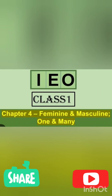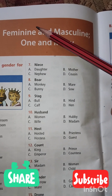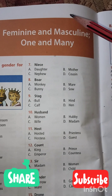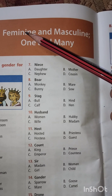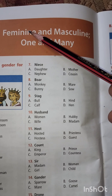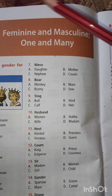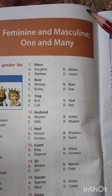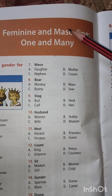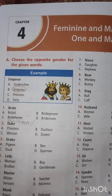Today we discuss Chapter 4: Feminine and Masculine, One and Many. Feminine means female, masculine means male. Feminine means girl, lady; masculine means man, boy. One and many - one means a single, many means both feminine and masculine. Now come to the exercise.